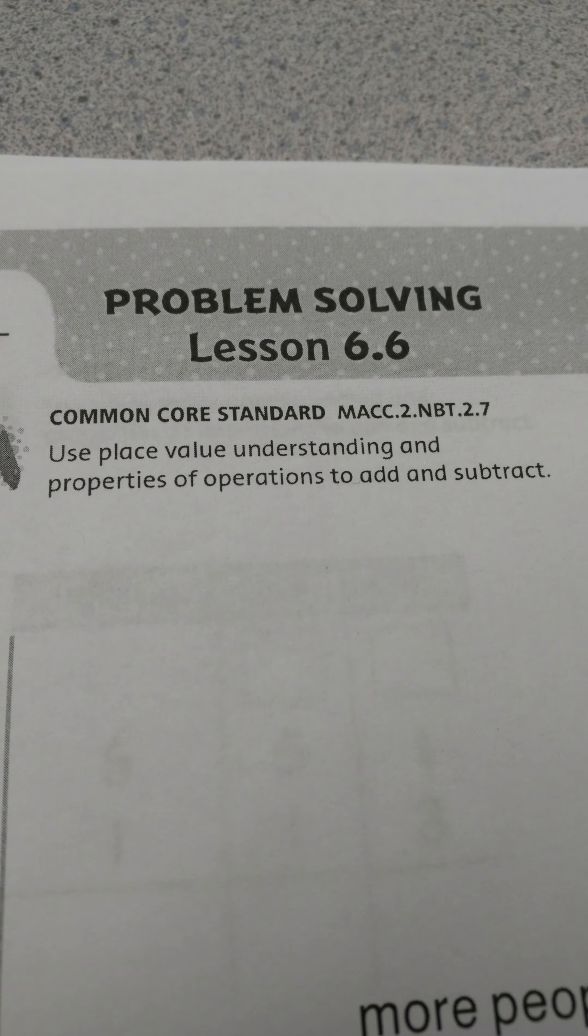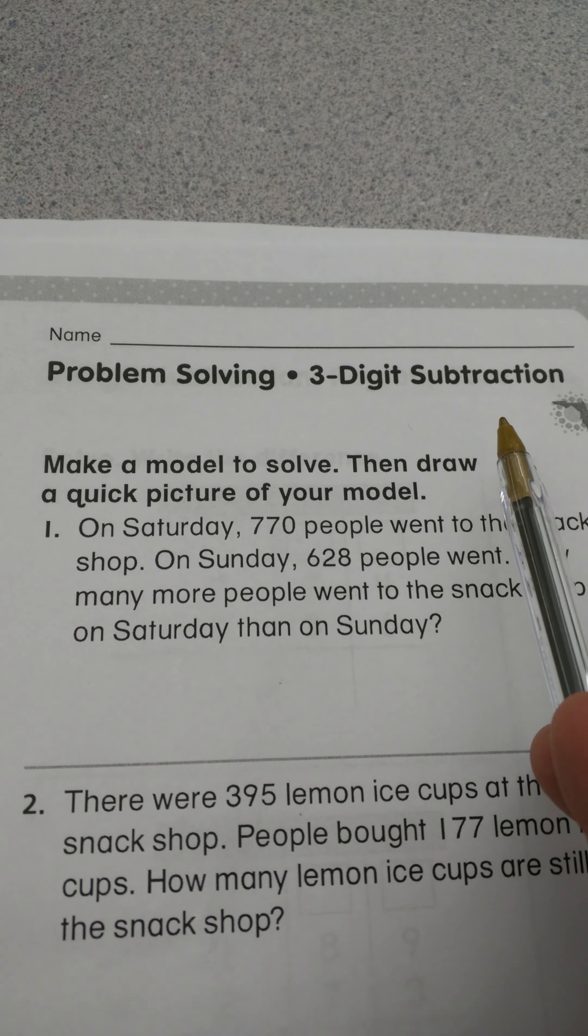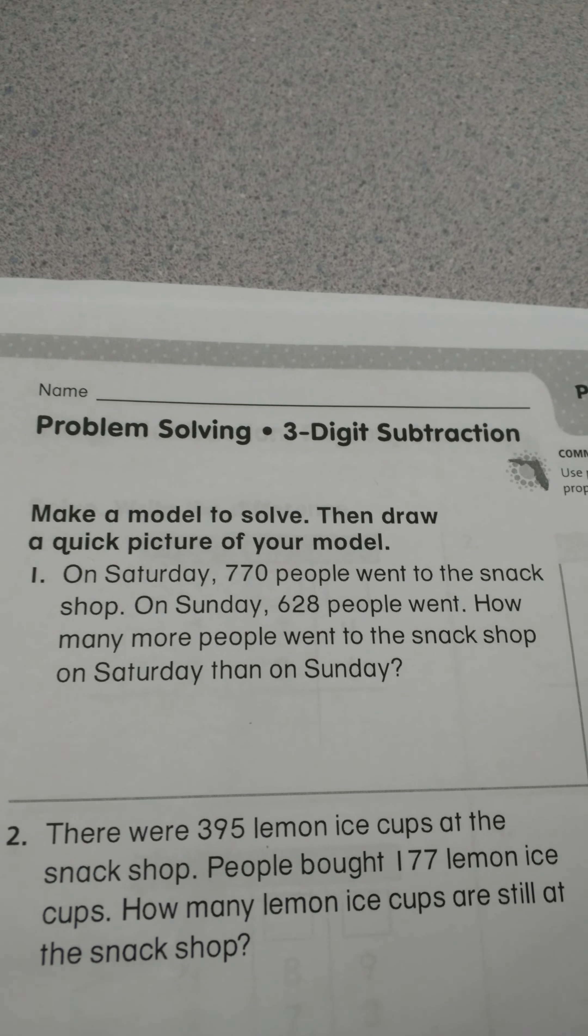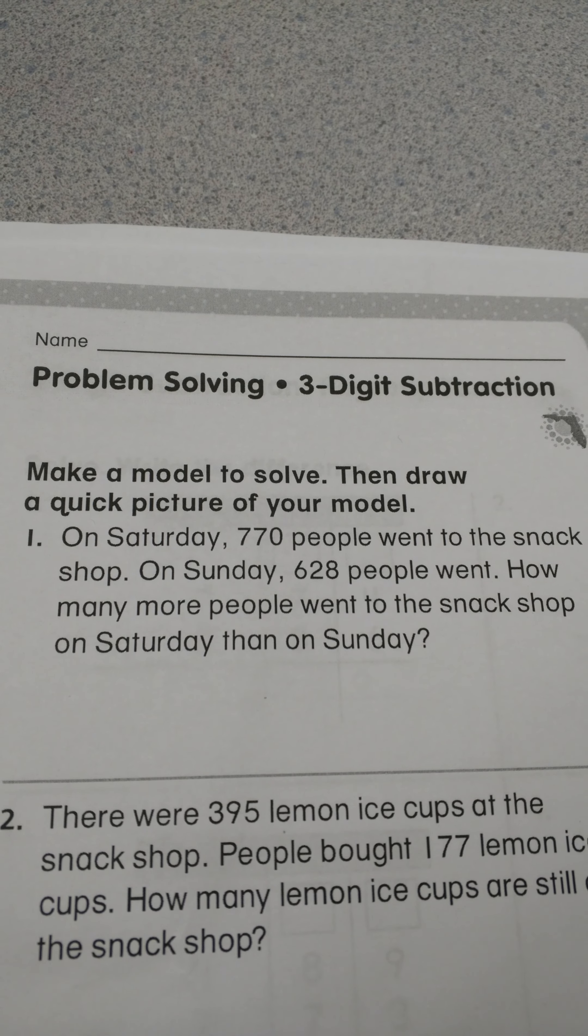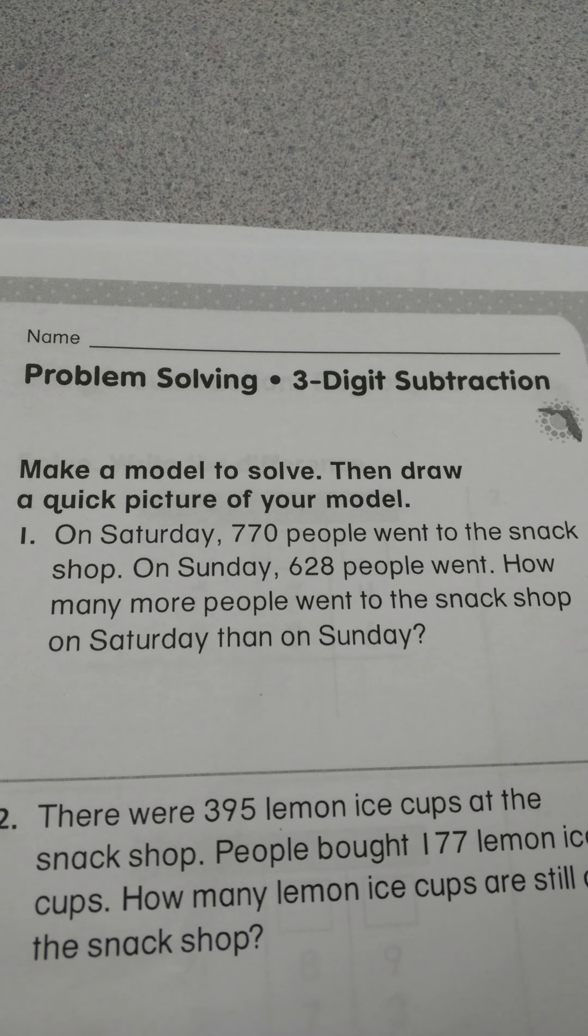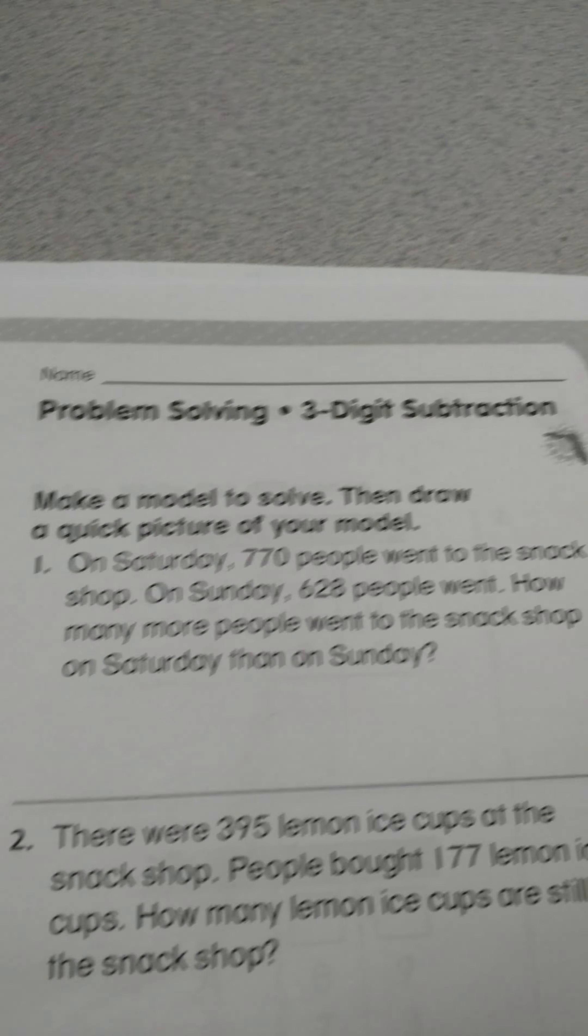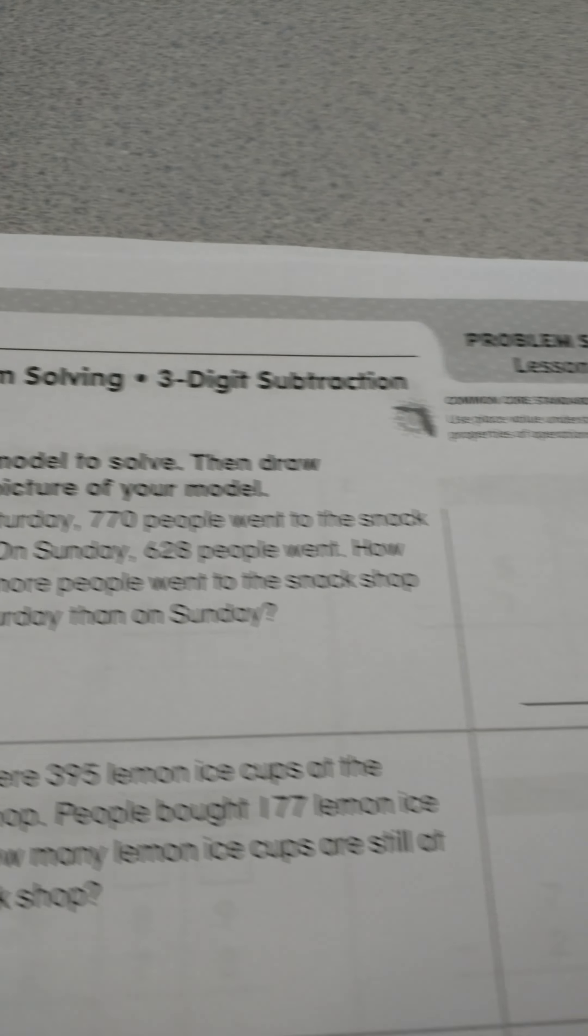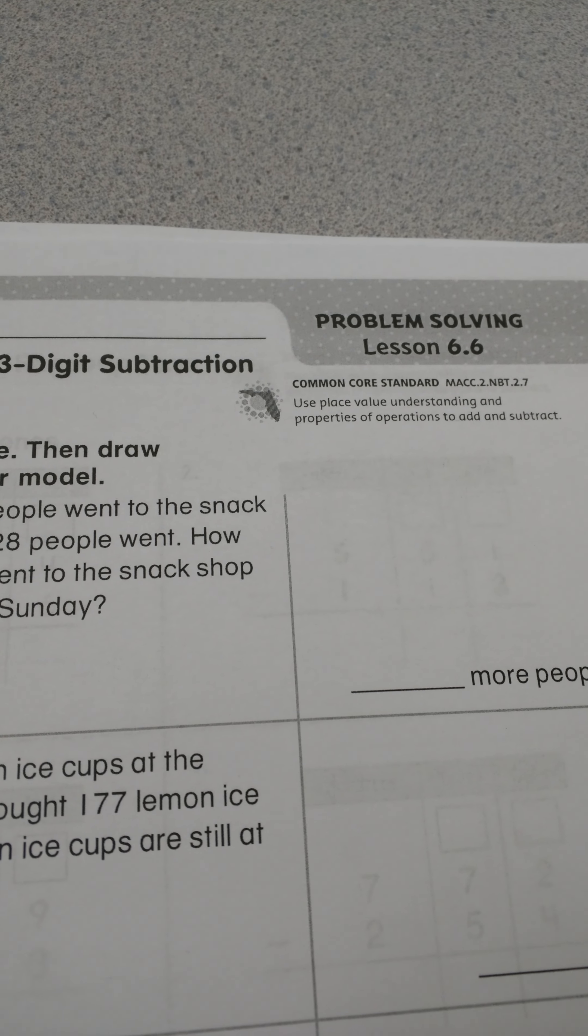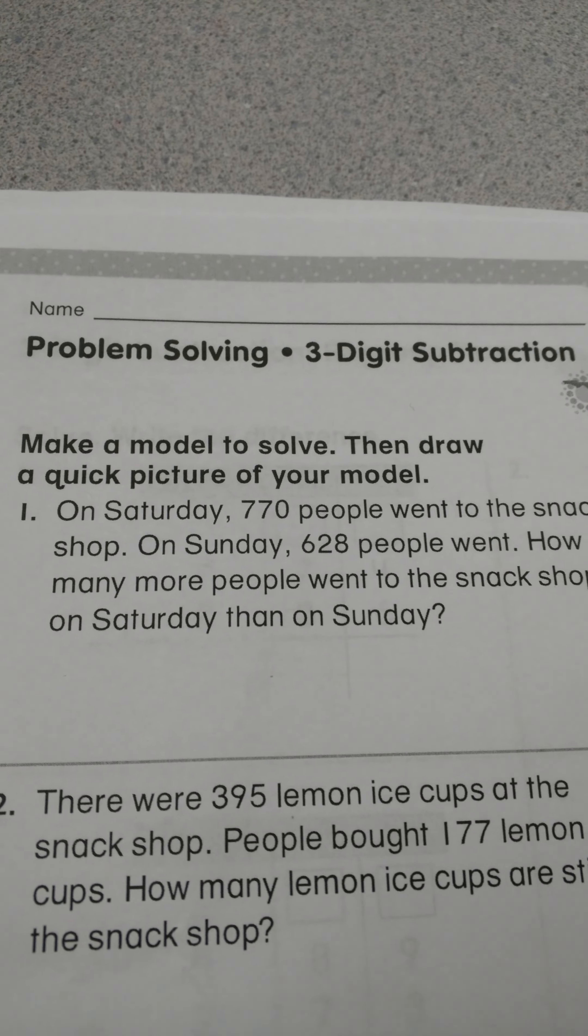This is second grade Go Math lesson 6.6, and today we're going to do three-digit subtraction. We went from three-digit addition, now we're doing subtraction, which is actually probably the hardest skill in second grade. They start off with word problems here, and it says make a model to solve, then draw a quick picture of your model. Obviously, we have to solve the question from the model that we are making.